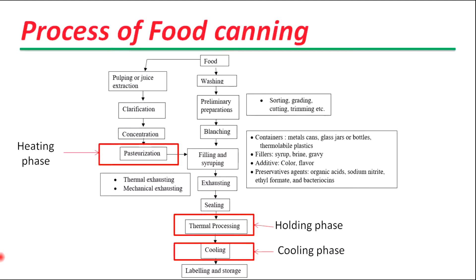The level of heat applied to a food depends on several factors: acidity of processed food, density, composition, resistance to heat transfer of food, heat resistance of microorganisms of interest in food, initial load of microorganisms, container, heating medium, equipment, and the process. The required temperature is then maintained for a certain period that is defined as the holding phase.